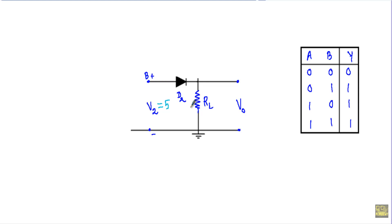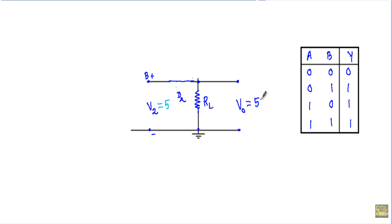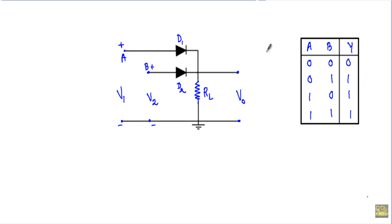The positive terminal of V2 is connected to the P side of diode D2 and the negative terminal is connected to the N side of D2, meaning diode D2 will be driven into forward bias by this V2 voltage. Since diode D2 is in forward bias, I can replace it with a short circuit. With D2 replaced by a short circuit, I am applying 5 volts across the output terminals, therefore our output voltage will be equal to 5 volts, which means our output will be at logic 1.